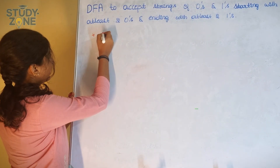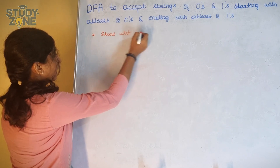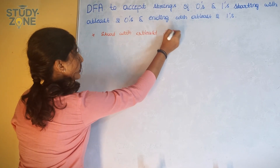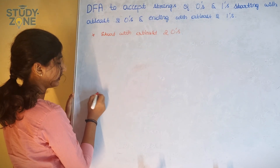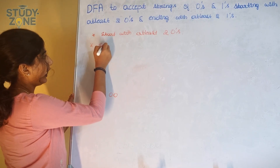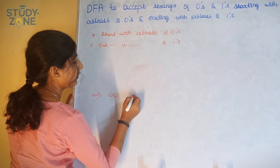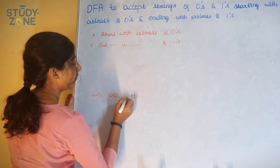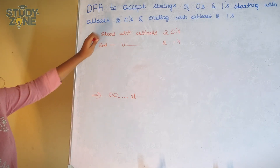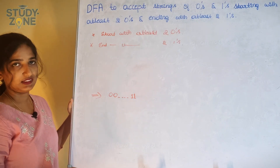So we have: start with at least two zeros, which means at first we should have zero zero, and then end with at least two ones, which means it should end with one one. In between we can have anything. So the condition is it should start with two zeros and end with two ones, but in the middle we can have anything.